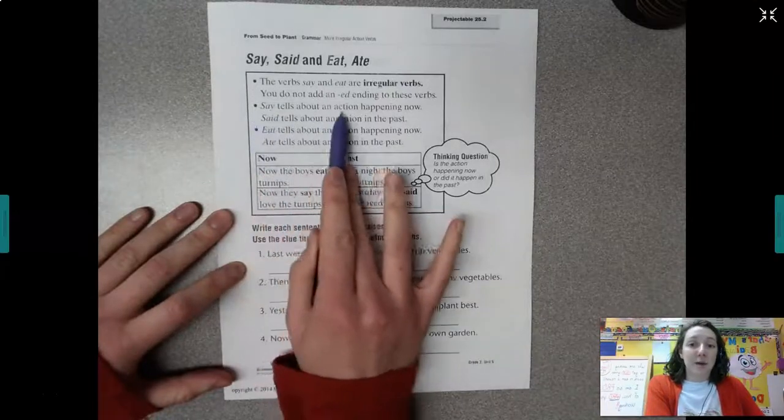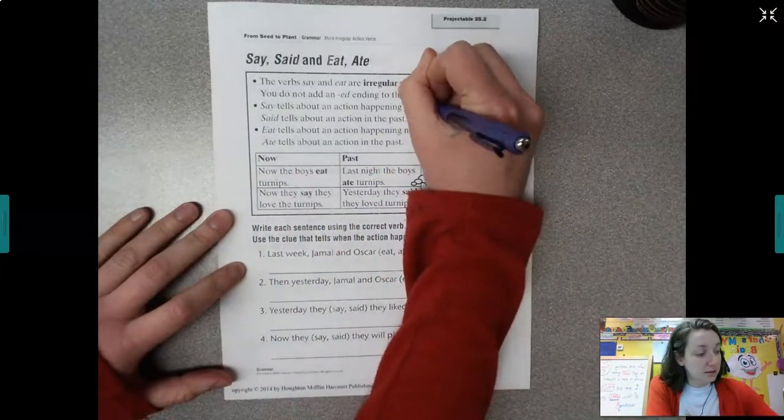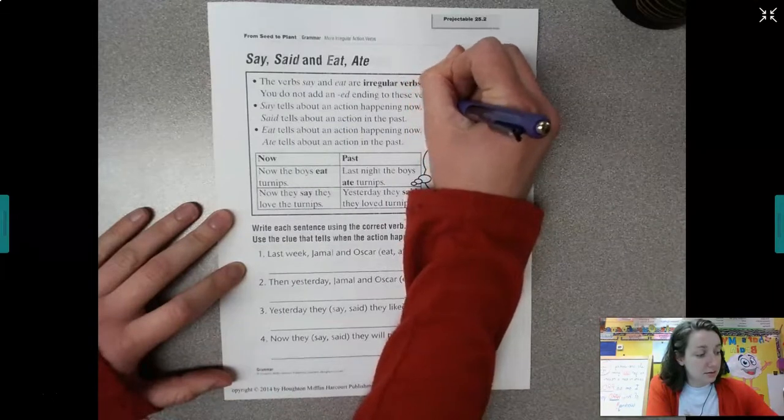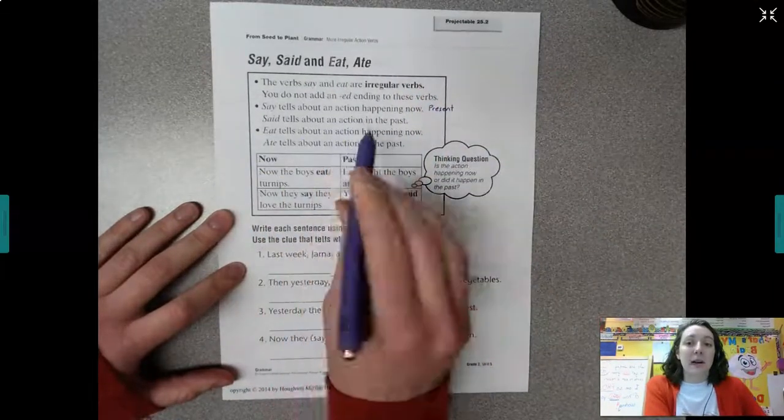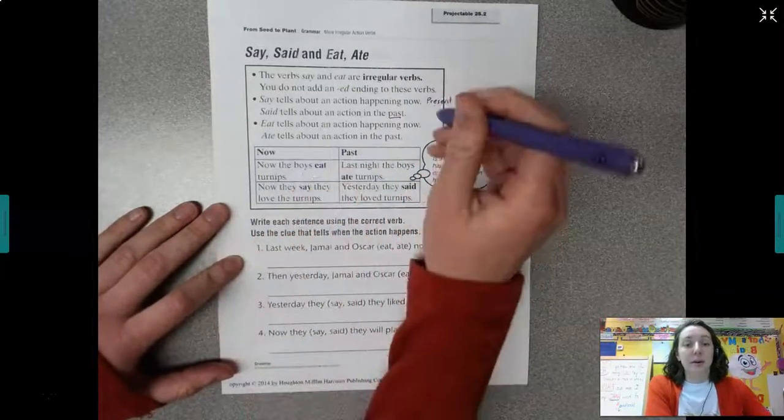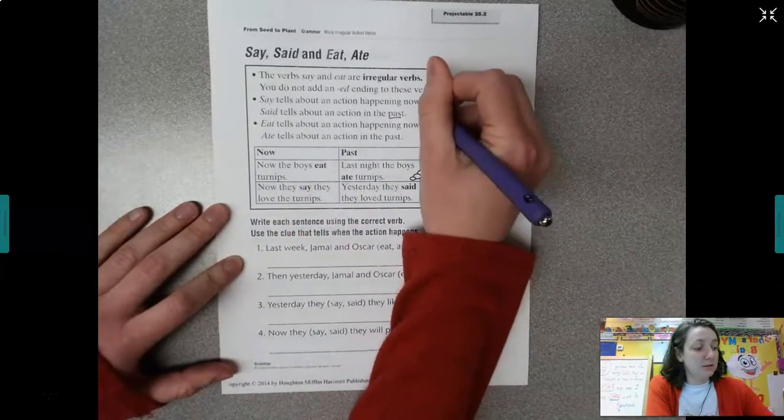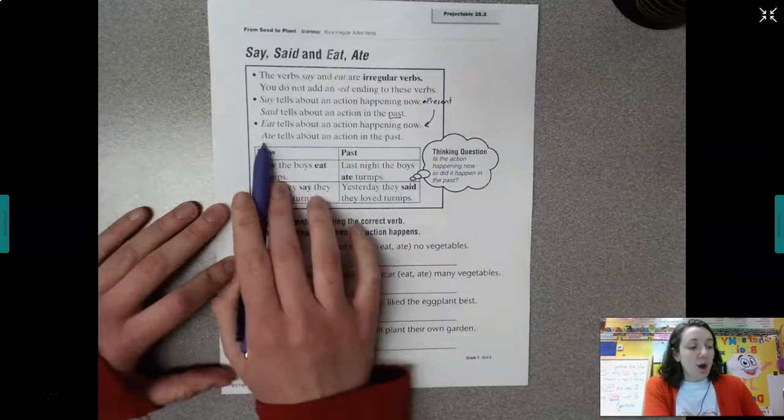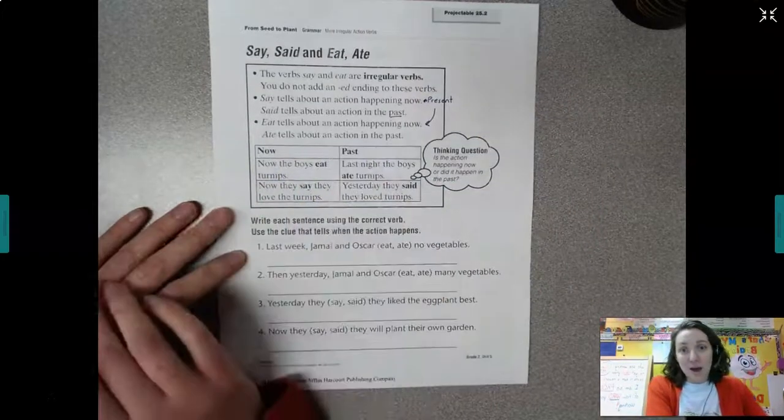Say tells about an action happening now, so that's the present. Said tells about an action in the past. Eat tells about an action happening now, also the present. And ate tells about an action in the past.